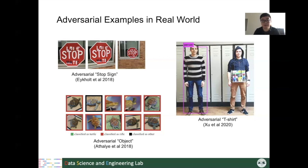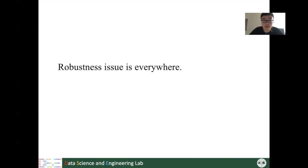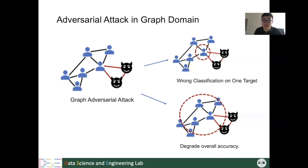The existence of adversarial examples can truly bring safety concerns to our machine learning model applications. The safety concerns for robustness can happen everywhere in machine learning applications. Instead of just computer vision tasks, adversarial attacks can also happen in other data domains — for example, graph data. Adversarial attacks in graph-structured data can have different behaviors compared to attacks in the image domain.